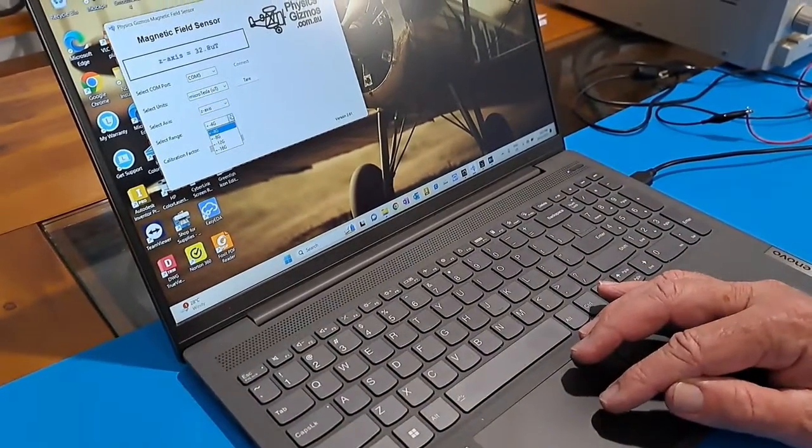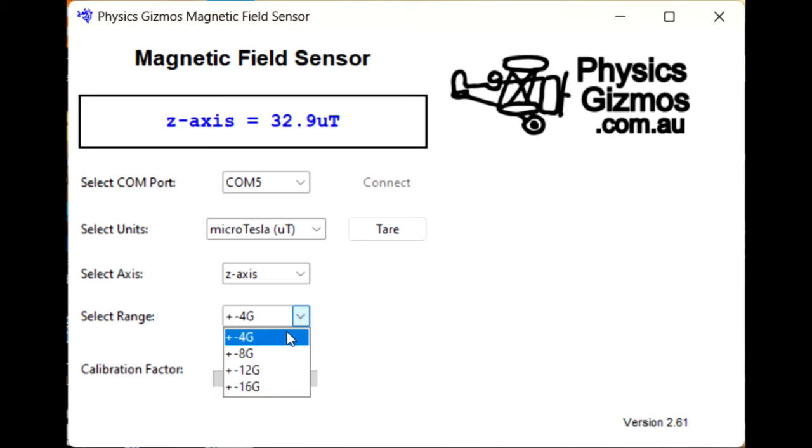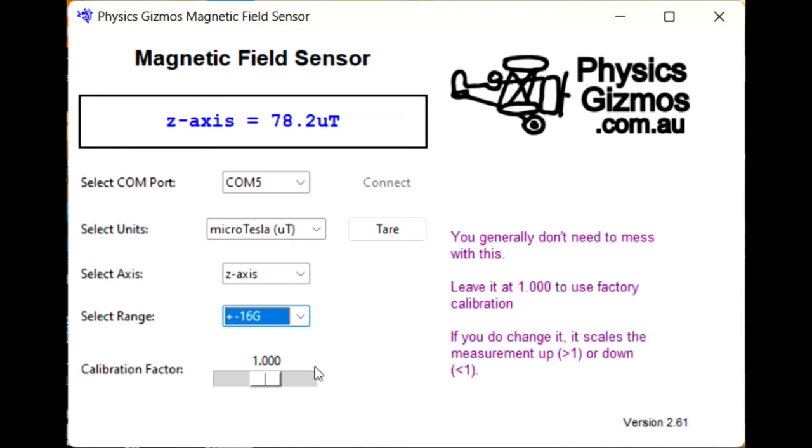It also has different ranges, so you can configure it to plus or minus 4 gauss, 8 gauss, 12 gauss, or 16 gauss, the widest range. So you can choose to be really sensitive or you can choose to have a wider range.